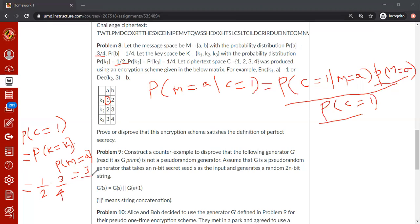So we found the denominator of this equation. We know how to find this 3 eighths. Here it is. So we are left with only one more. We need to find the probability of c equal to 1, m equal to a, given that m equal to a.